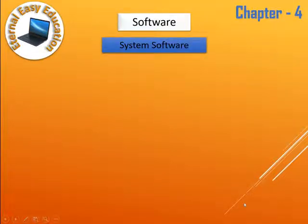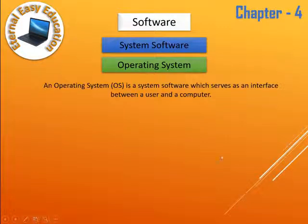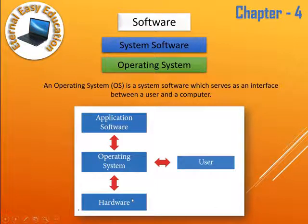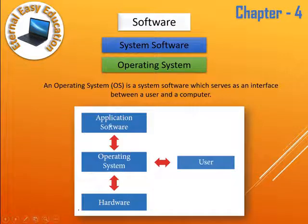The operating system is a type of system software which serves as an interface between the user and the computer. It is the only intermediate between the computer hardware and the user. First we need hardware, then the operating system, and only then can we use application software. The operating system is the communication medium between application software, hardware, and the user.